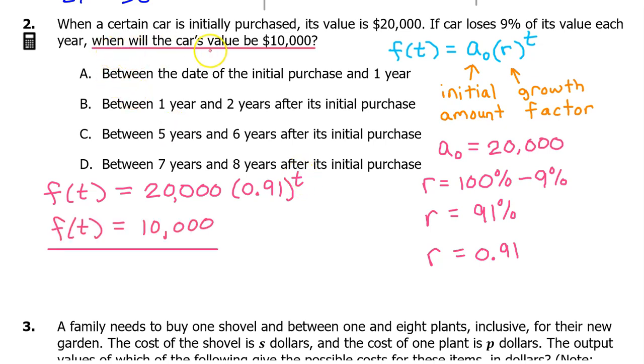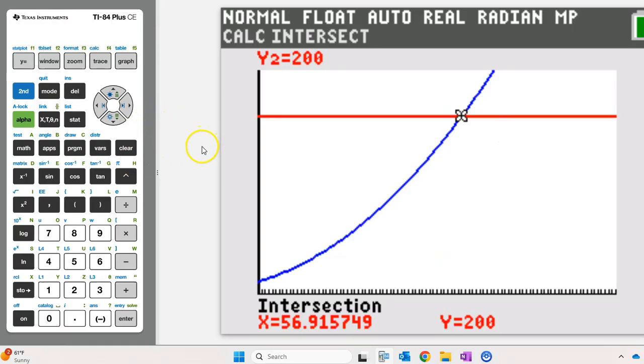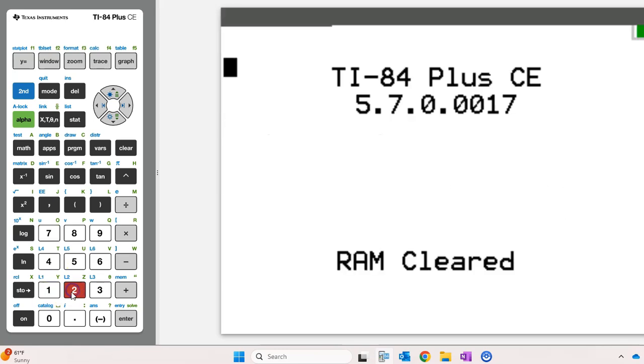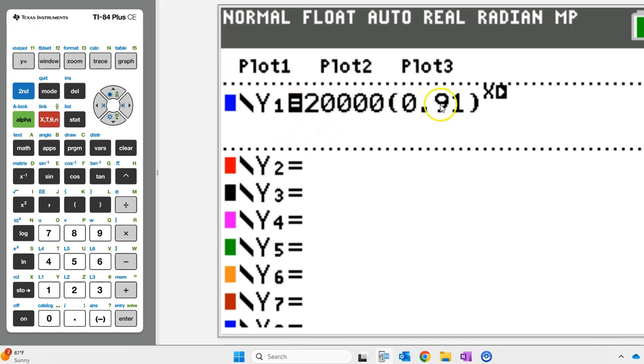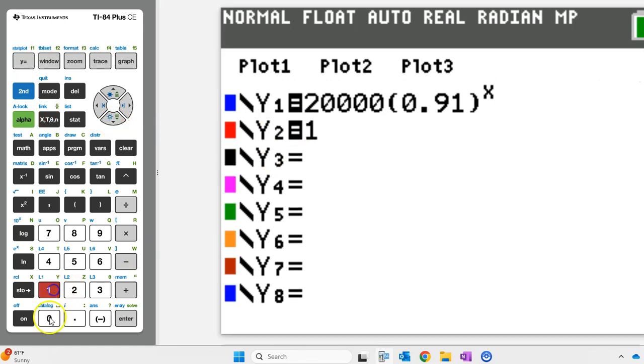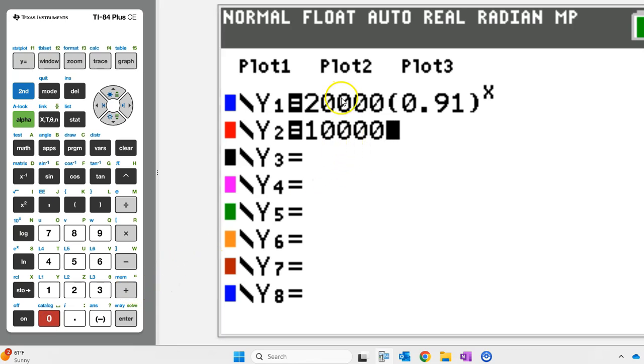The question is, when will the car's value be $10,000? This problem is calculator active, so we can use the calculator to find where f(t) will equal 10,000. First, reset your calculator by hitting 2nd plus 7, 1, 2. That gives you a fresh calculator. Now hit the y equals button and type in f(t) as y1. Here's f(t). To find where f(t) equals 10,000, put 10,000 on y2. And we will graph both equations and see where they intersect.